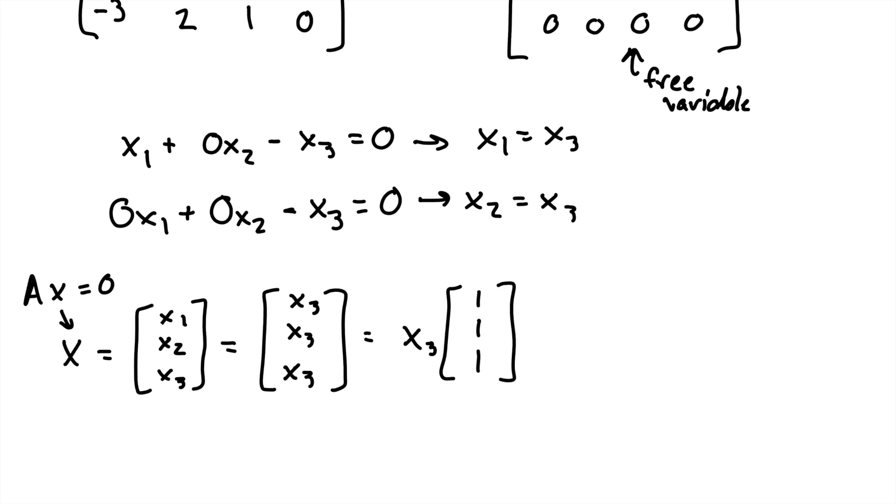So AX equals 0 will always be true when X3 is any scalar of the 1, 1, 1 vector.